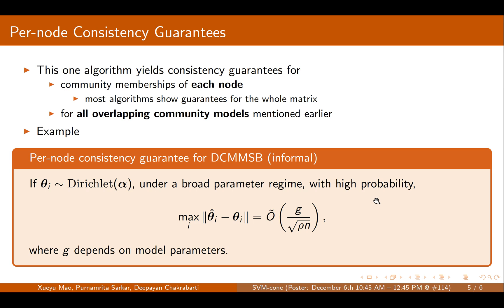The per-node consistent guarantee for DCMSB is as follows. In this model, the community membership vector theta_i comes from a Dirichlet distribution. We can show that under a broad parameter regime with high probability, the largest row error can be bounded by O-tilde of G over square root of n, where O-tilde has polylog(n) factors and G depends on model parameters. The 1 over square root of n rate enables our guarantee to work on a semi-dense regime in network models.